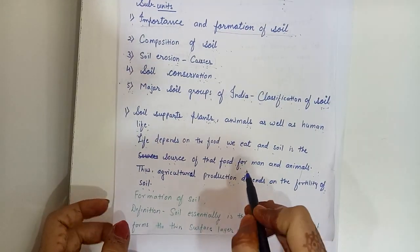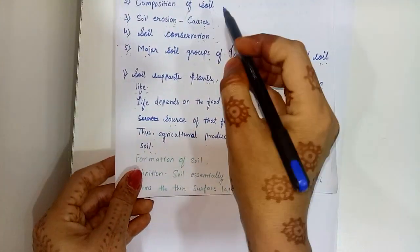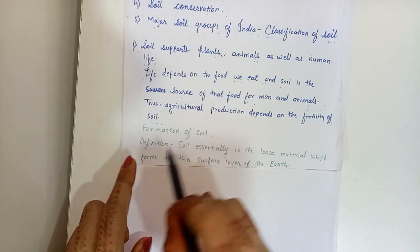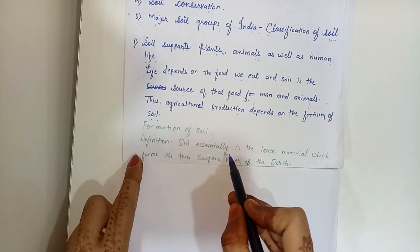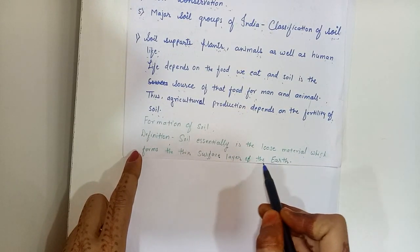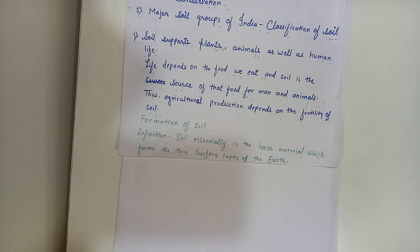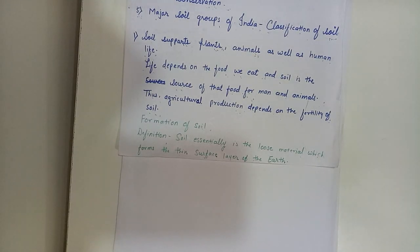Now come to formation of soil. Soil essentially is the loose material which forms the thin surface layer of the earth. Its formation is related to the parent rock material, relief, climate and vegetation. Animals, insects and men also play an important role in the formation of soil.